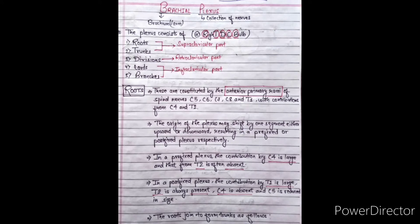Welcome to this lecture on brachial plexus, one of the most important topics of the upper limb. Brachial means brachium or arm, and plexus means collection of knobs. The brachial plexus consists of roots, trunks, divisions, cords, and branches. Roots and trunks are the supraclavicular part. We can remember this using the mnemonic 'RTDCB' — R for roots, T for trunks, D for divisions, C for cords, B for branches.